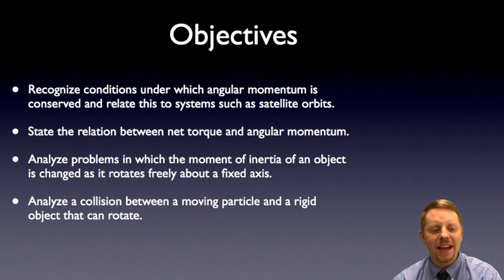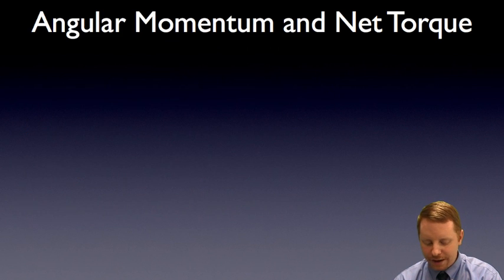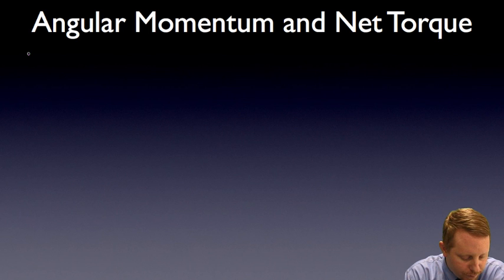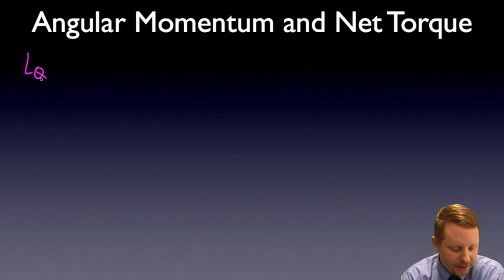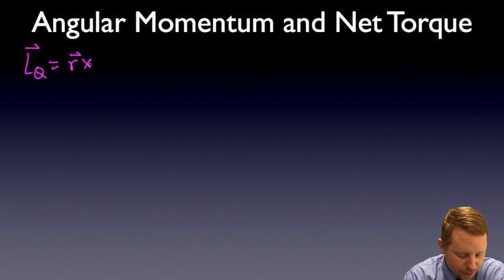So with that, let's dive in and talk about the relationship between angular momentum and net torque. Let's start by considering the angular momentum about point Q for an object with some momentum p. The angular momentum about point Q by definition is going to be r cross p.